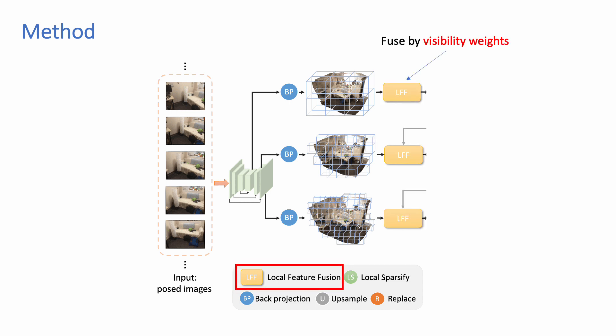For each voxel, we use the visibility weights to aggregate multi-view features instead of treating them equally.